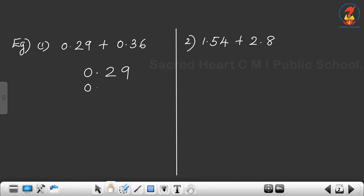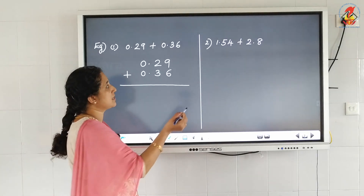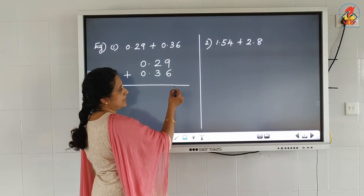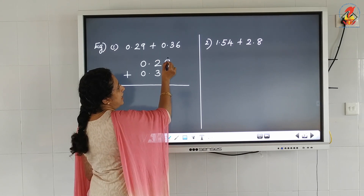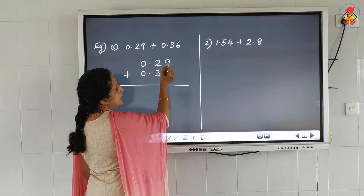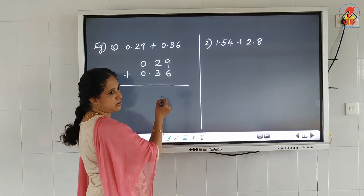Write 0.36 below. Now we have to add, starting from the right side — from the decimal part. The decimal part has a tenths place and a hundredths place, so the maximum place is the hundredths place. You have to start from the hundredths place onwards.